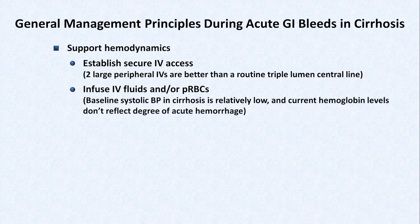Also, current hemoglobin levels don't reflect the degree of an acute hemorrhage. When people hemorrhage, they hemorrhage whole blood, not just red blood cells. So the hemoglobin concentration remains the same until various mechanisms cause internal redistribution of fluids into the intravascular space, a process which may take as long as 12 to 24 hours.